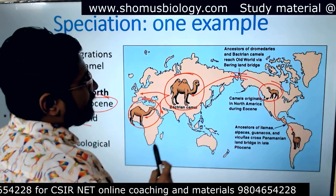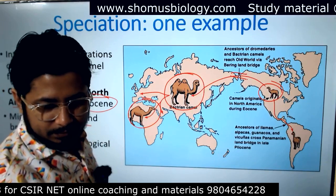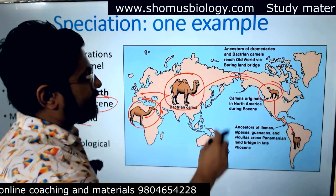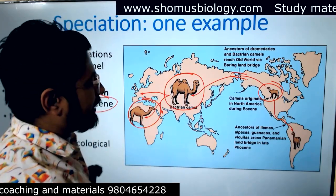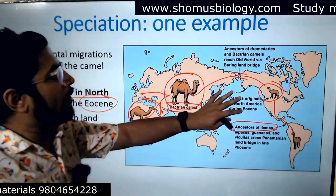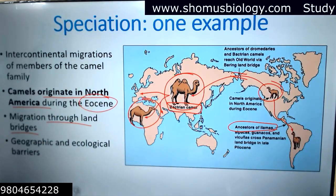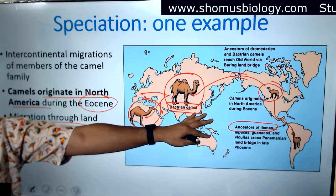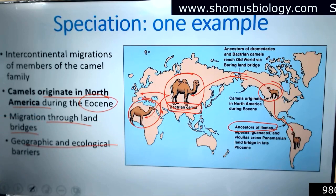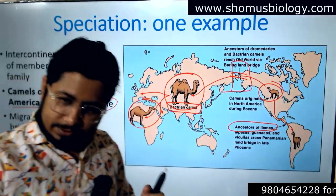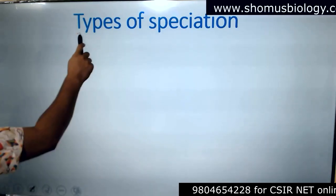The camels migrated through corridors between regions — from North America to Asia, from Asia to Africa, and from North America directly to South America — and they developed different forms. All the different types of camel species we observe today have one common ancestor that started its journey from North America. They became geographically and ecologically isolated, with oceans acting as barriers, helping to develop different species.